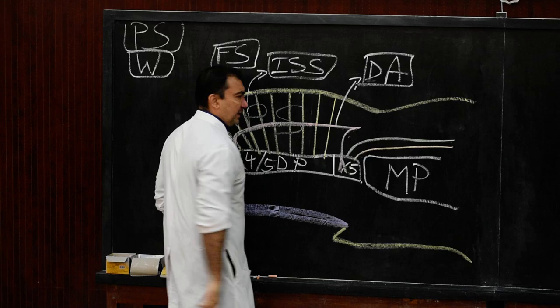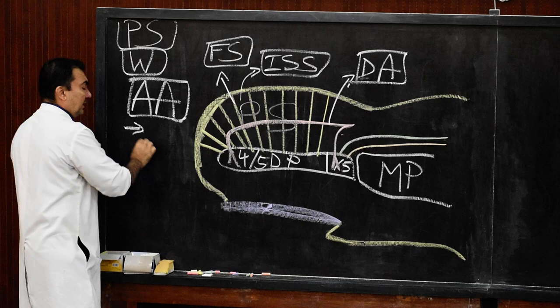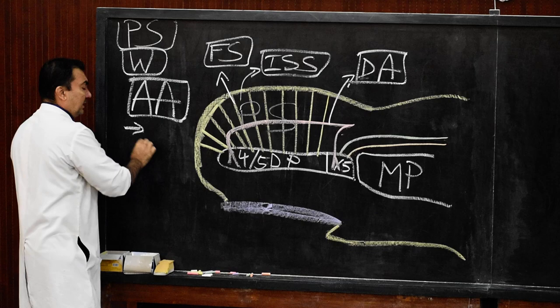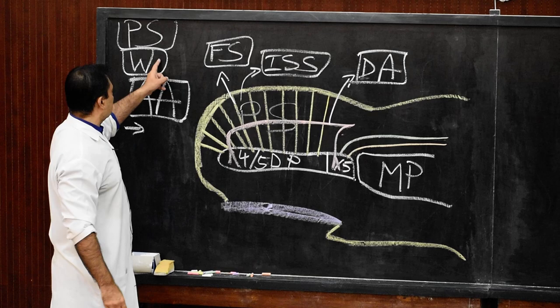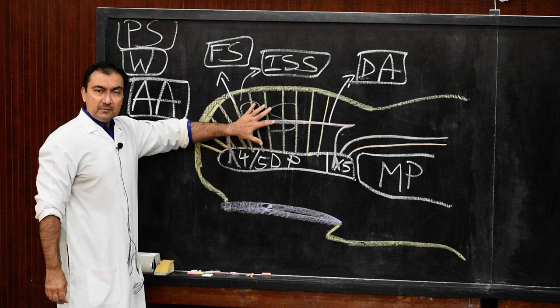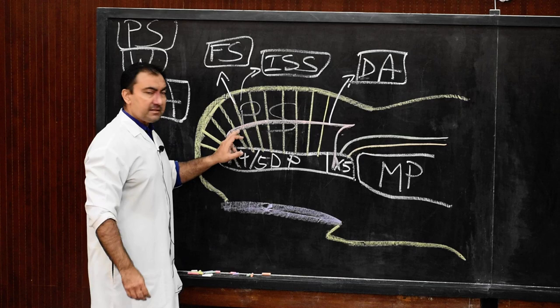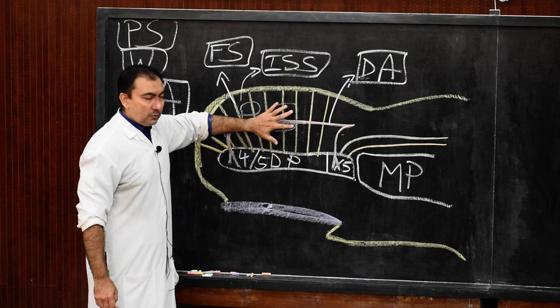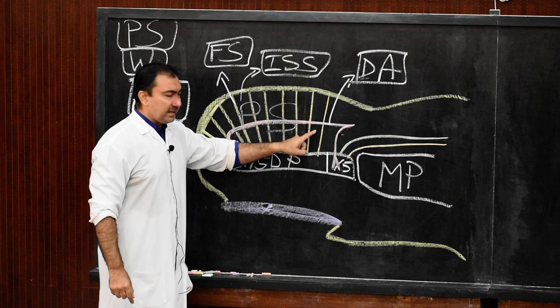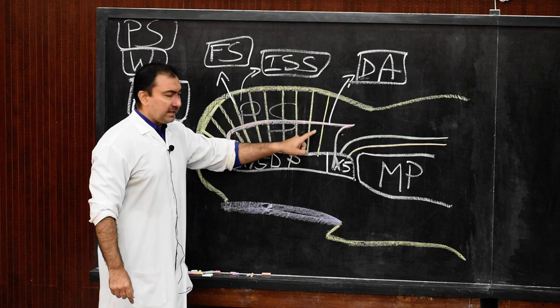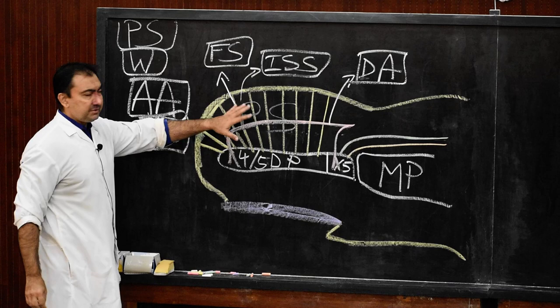Now for applied anatomy: first, any infection of this pulp space of Whitlow will cause severe throbbing pain because of increased tension in all the interceptal compartments. Infection of the pulp space will therefore produce severe throbbing pain on the tips of the digits due to increased tension in the interceptal compartments.